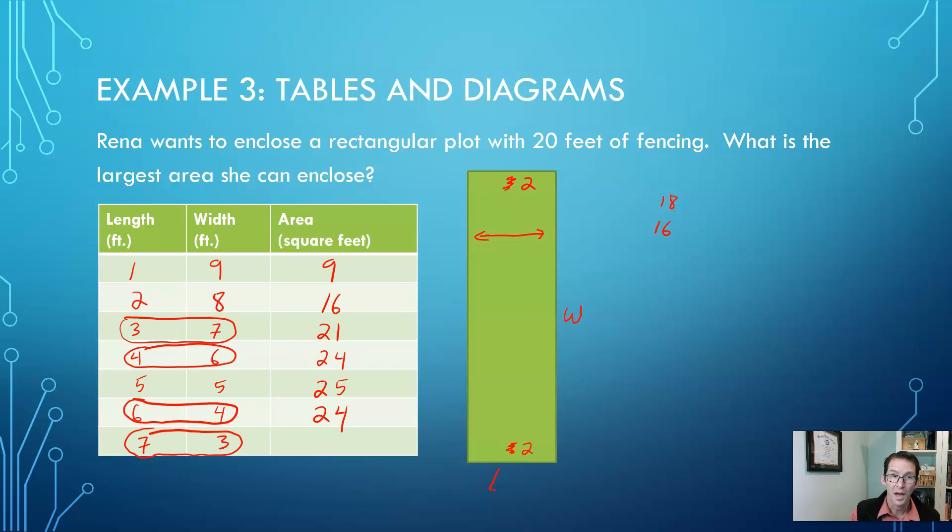So what do you notice about our areas? Well, we notice that they're going up and then they're starting to go down again. So in this case I feel comfortable saying that the largest area that she can enclose is going to be twenty-five square feet, and that's going to happen when we have a length of five and a width of five.